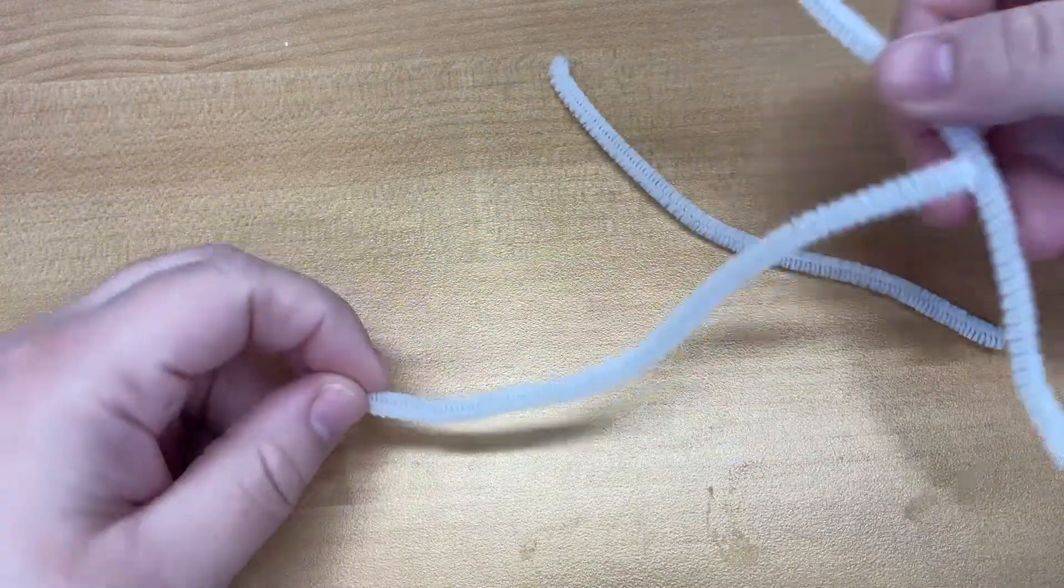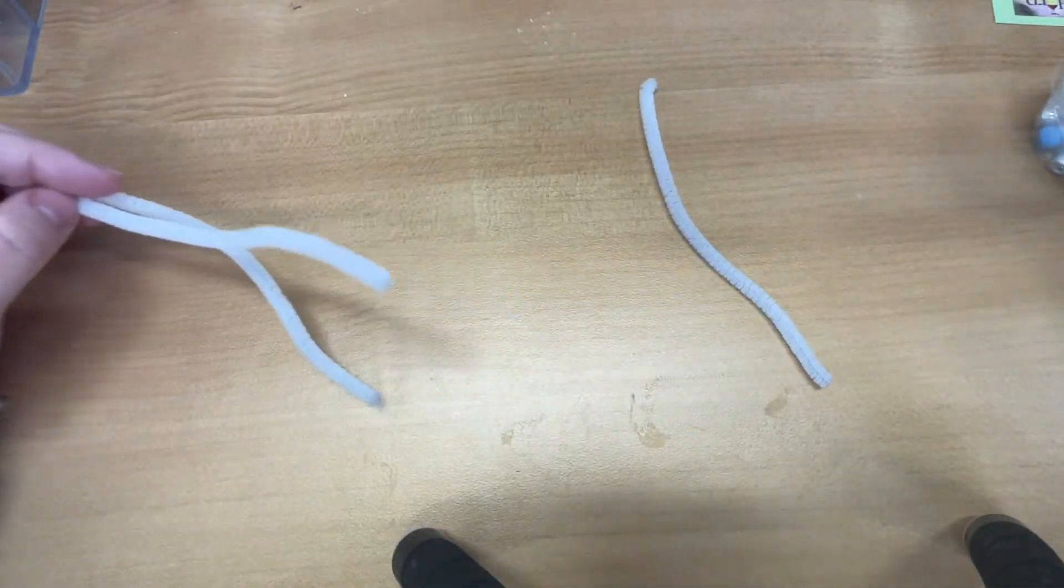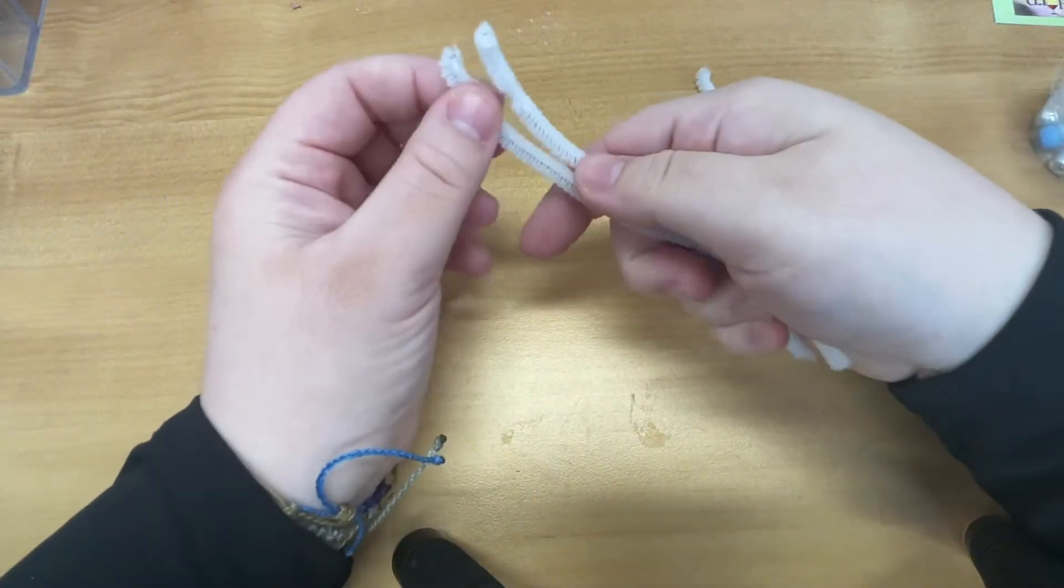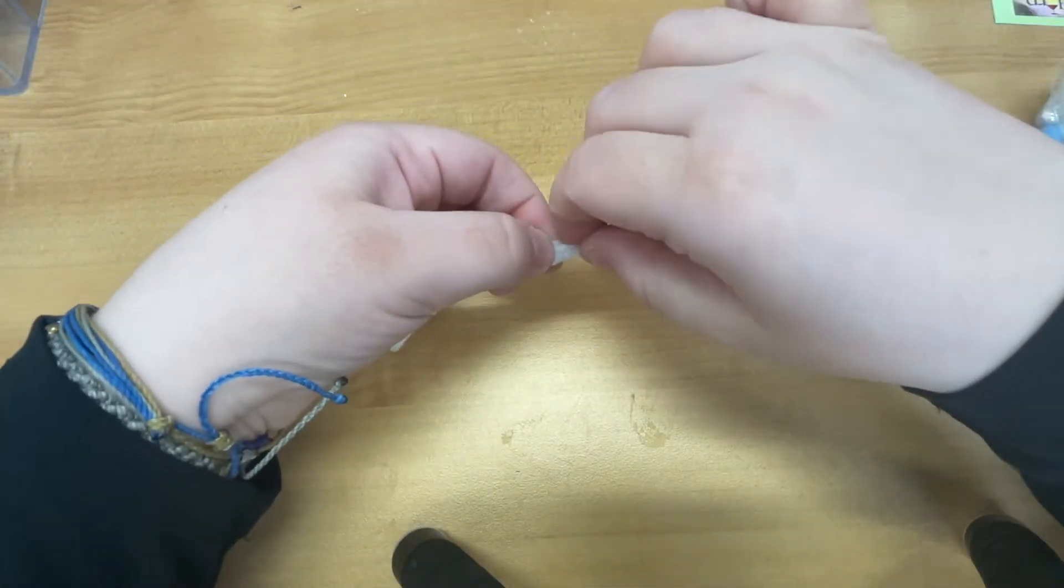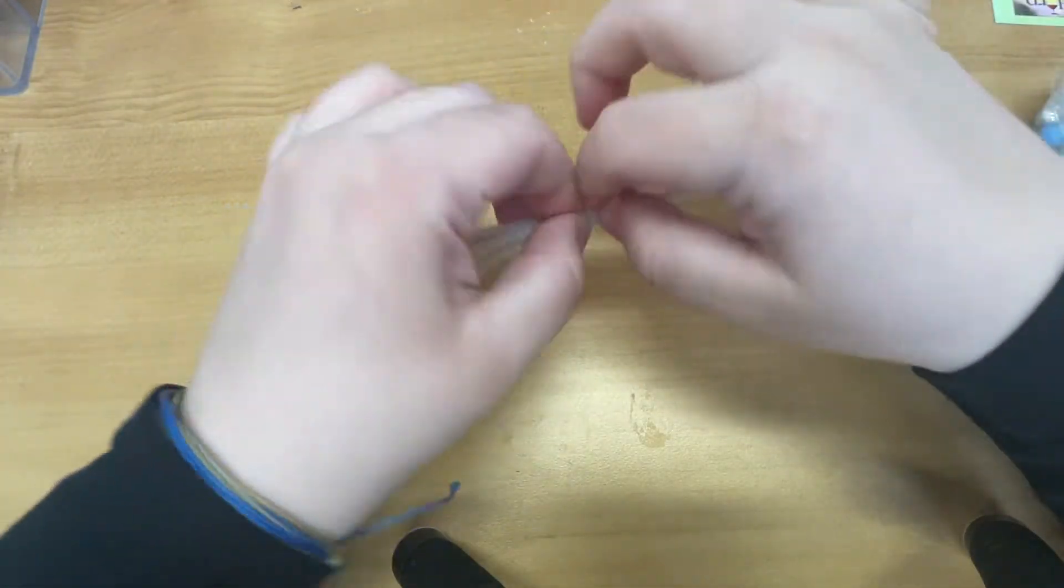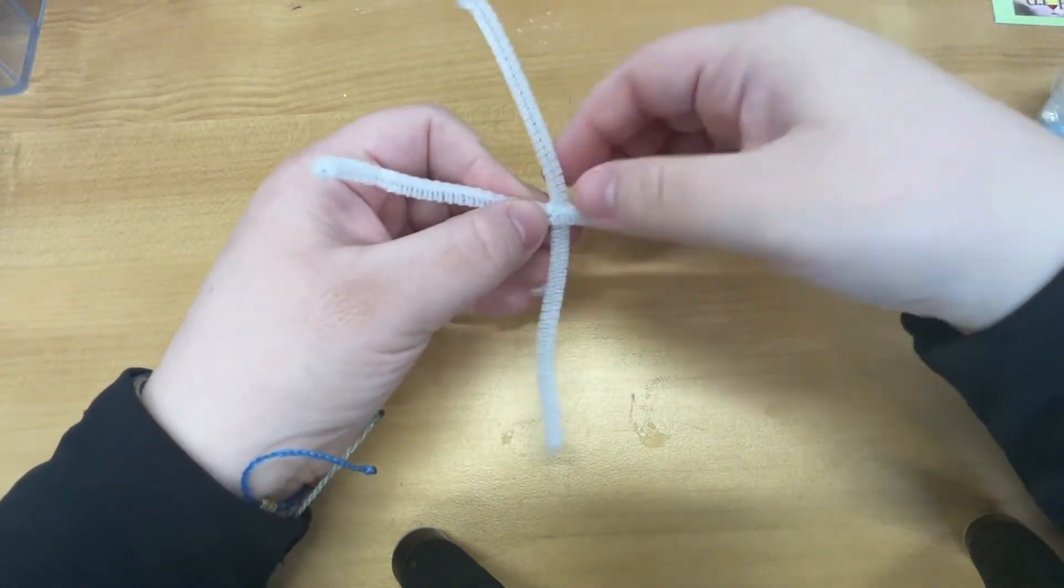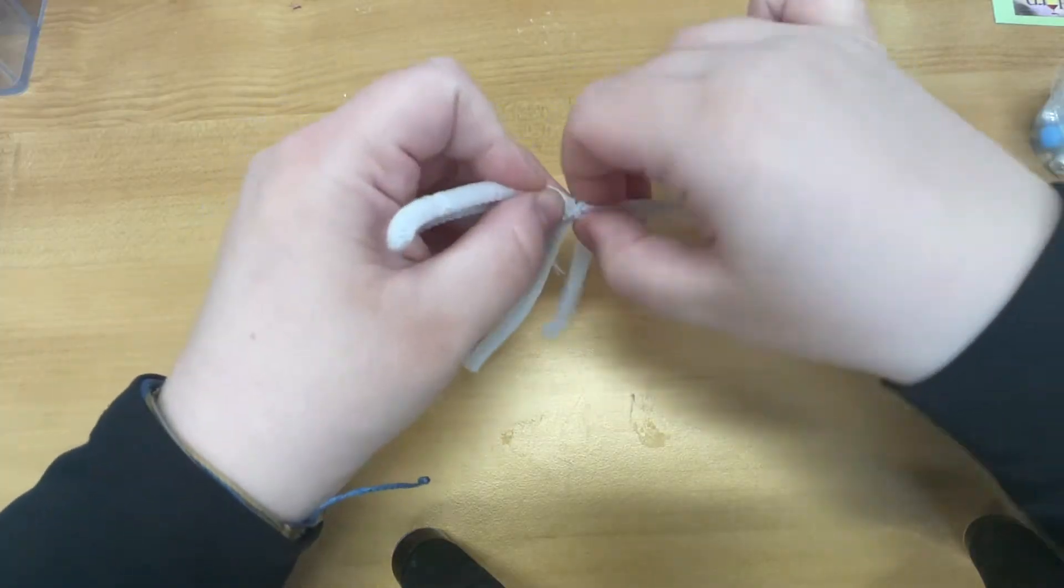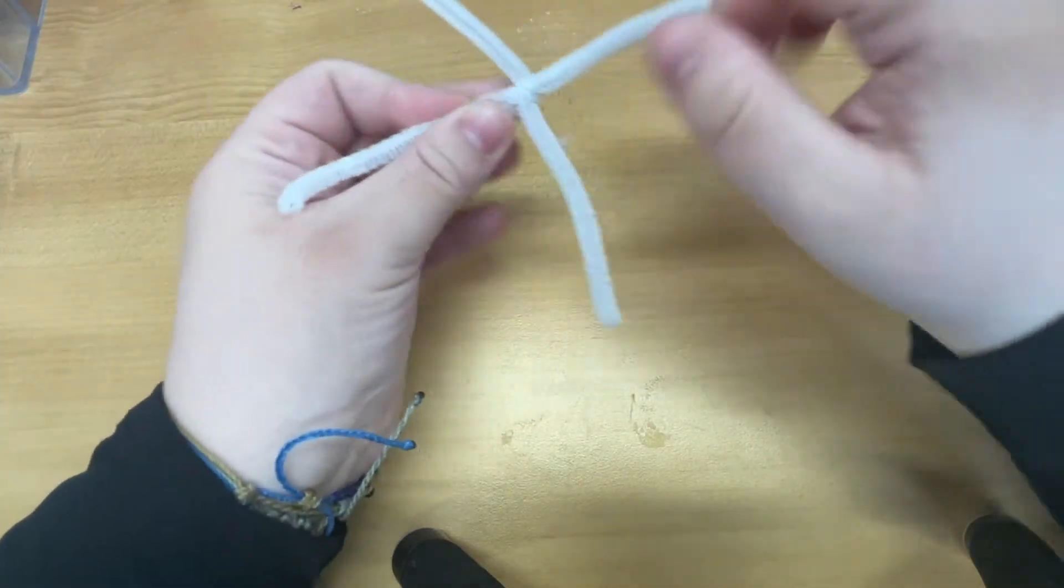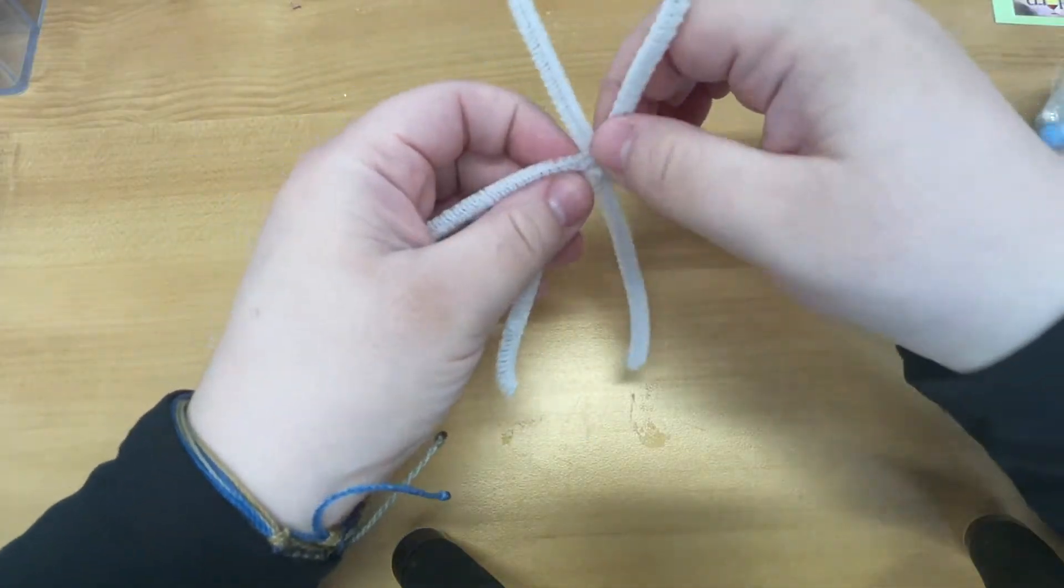So for this craft we want to take our pipe cleaners. Let me just push this back a little bit. First you're going to take two and then you're going to take them in the middle and you're just going to twist, really twist like twice. And then you're going to take your third one and around the middle we're just going to twist. So you should have six bits.